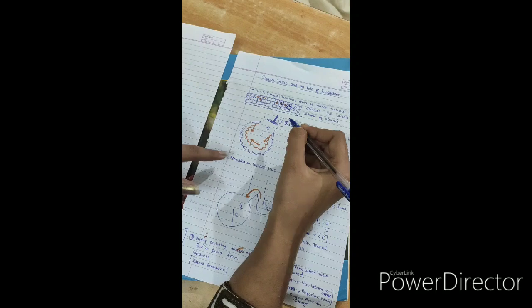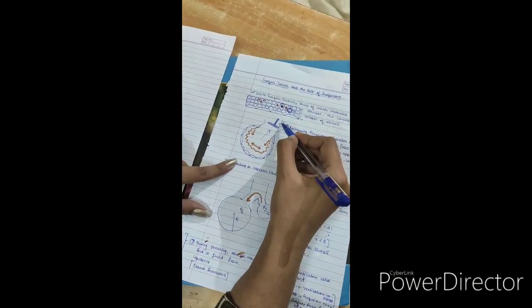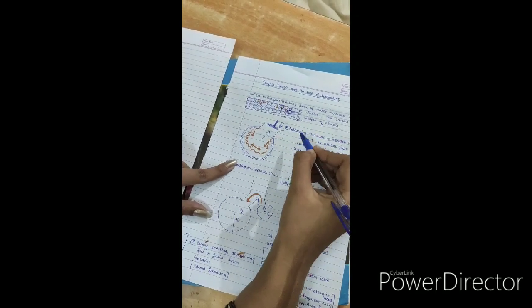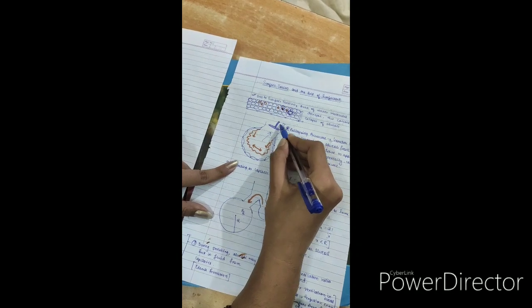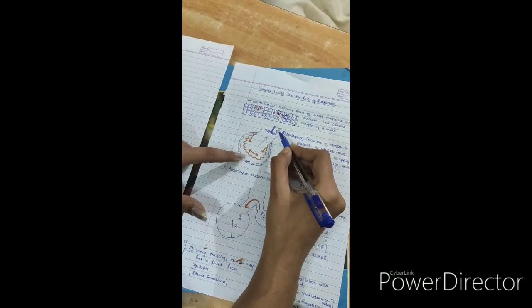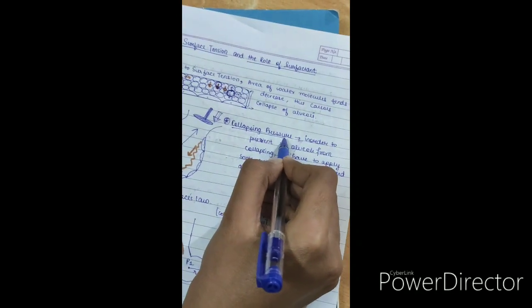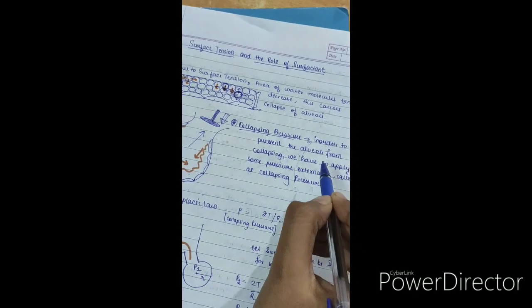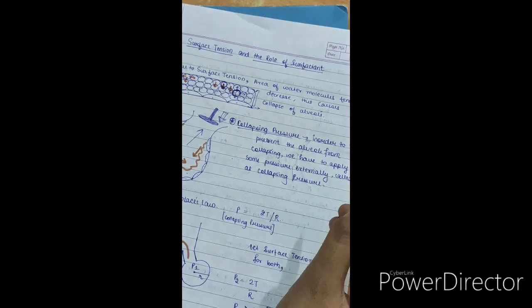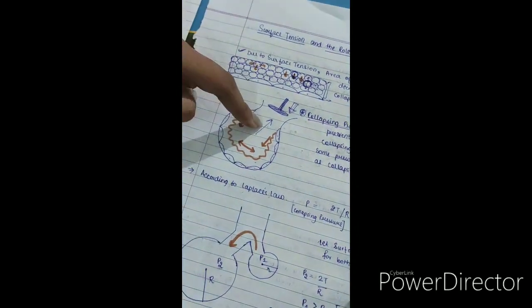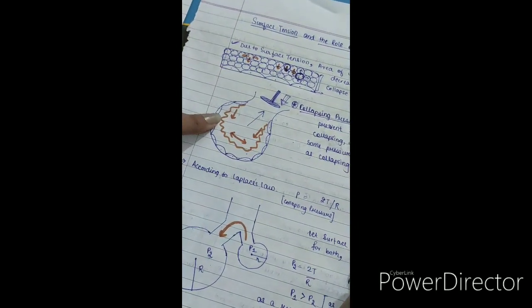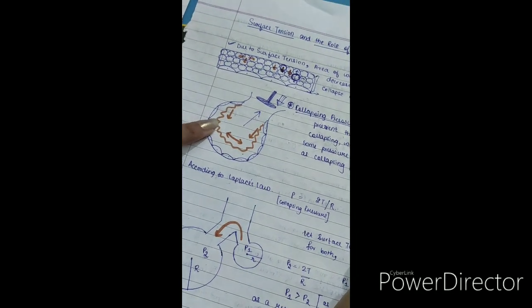If we want to prevent the collapsing of this alveoli, we have to exert certain pressure from outside. Now this pressure which we have to exert from outside in order to prevent the alveoli from collapsing, this is called the collapsing pressure. It is the pressure to prevent the alveoli from collapsing which we have to exert externally. The reason for this collapsing is surface tension.